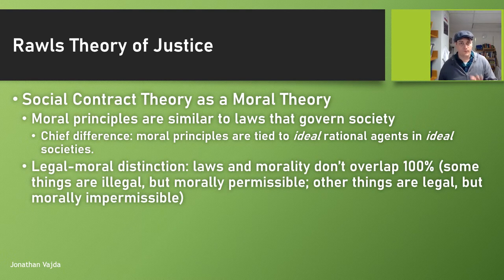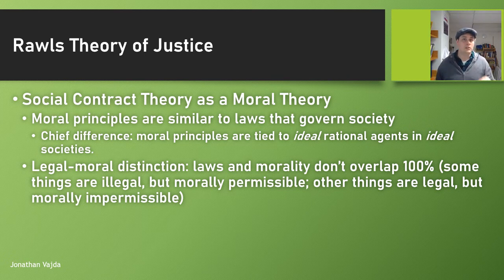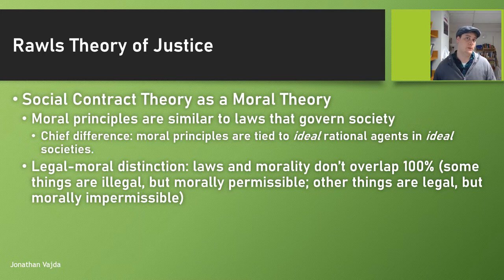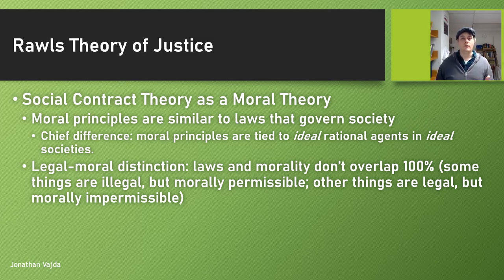Critical for understanding social contract theory is that it's not saying morality is just the law. Instead, there's a legal/moral distinction — laws and morality don't overlap 100%. Some things that are illegal can still be morally permissible, and some things that are morally impermissible might still be legal. There's not a 100% overlap.